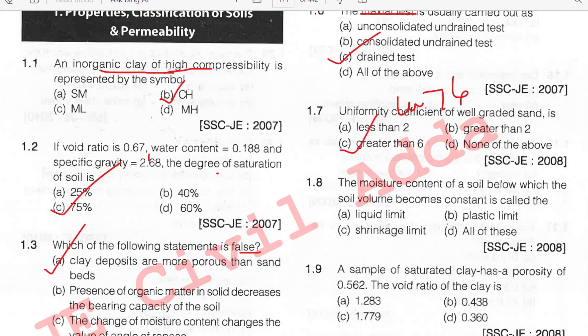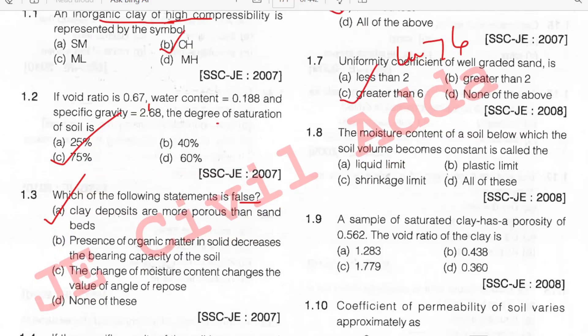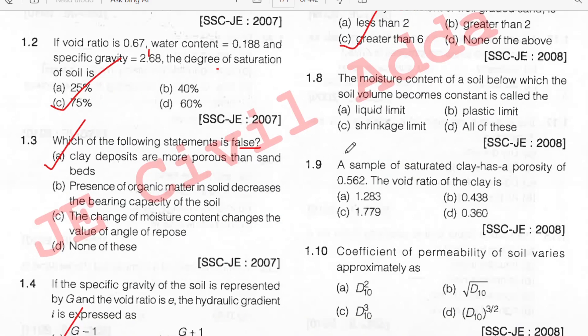The moisture content of soil below which the soil volume becomes constant — when the soil volume becomes constant, that corresponds to the shrinkage limit. Option C.